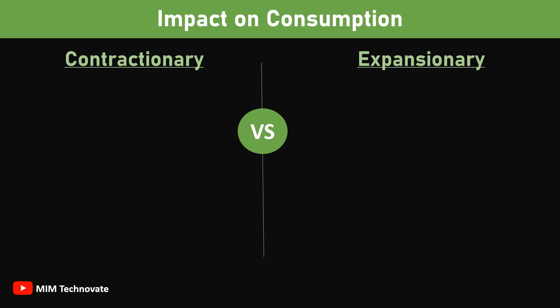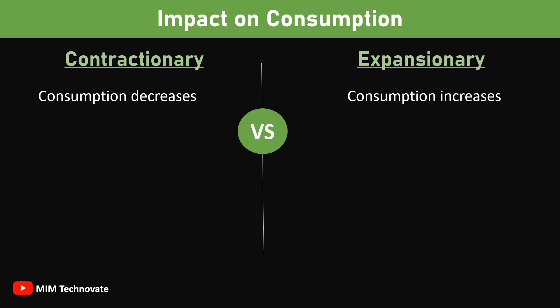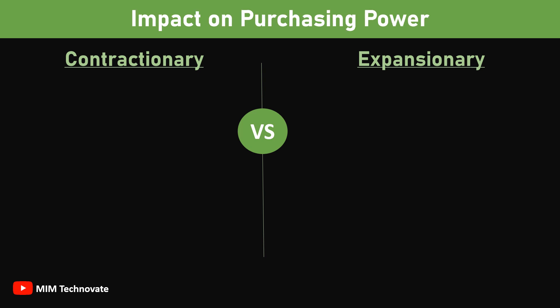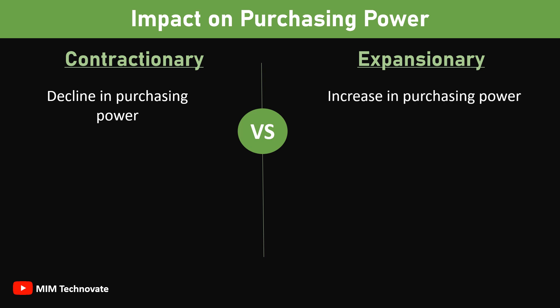Impact on consumption: in contractionary fiscal policy, consumption decreases, while in expansionary fiscal policy, consumption increases. Impact on purchasing power: in contractionary fiscal policy, there is a decline in purchasing power. On the other hand, in expansionary fiscal policy, there is an increase in purchasing power.